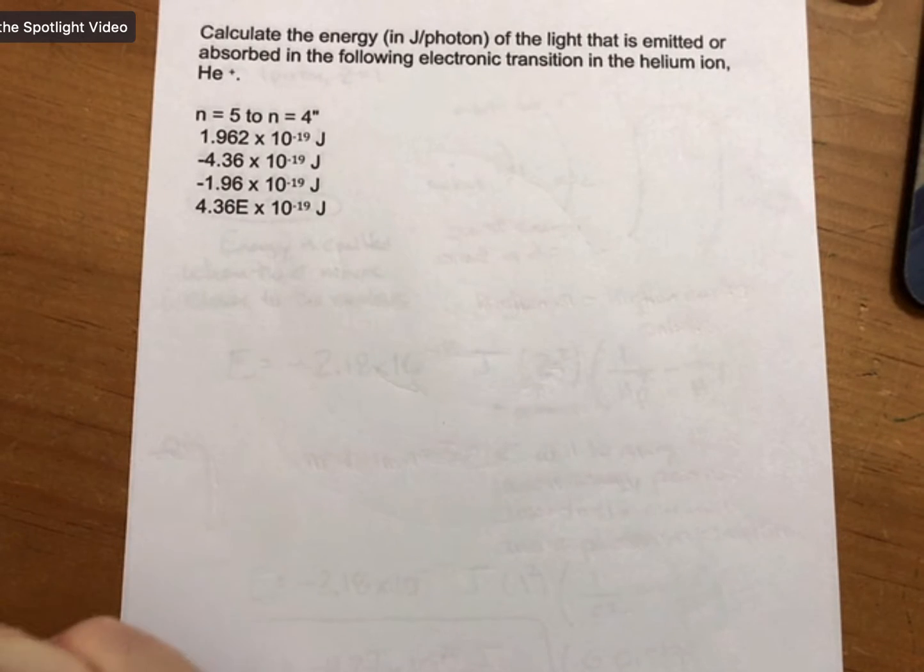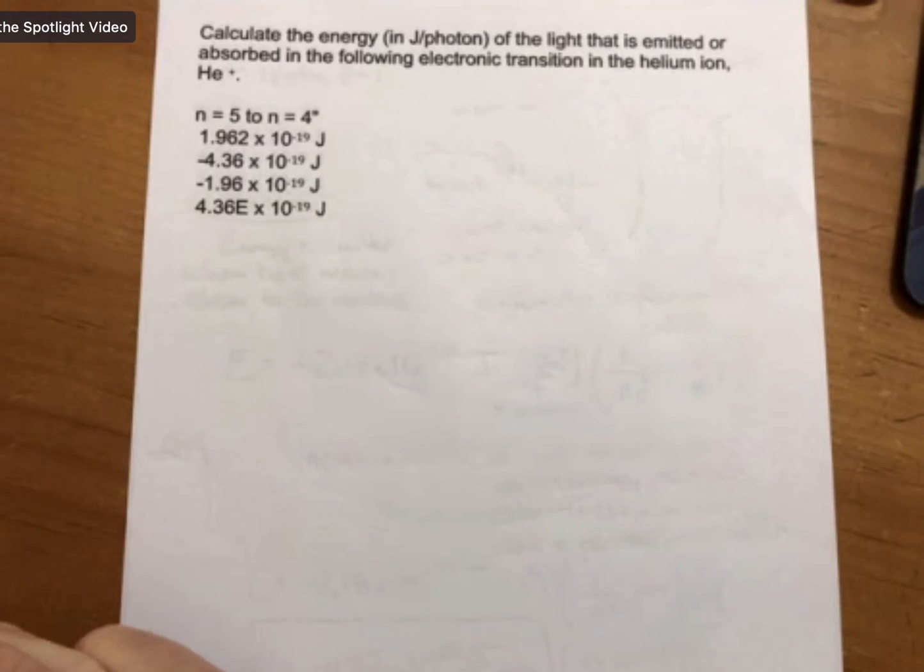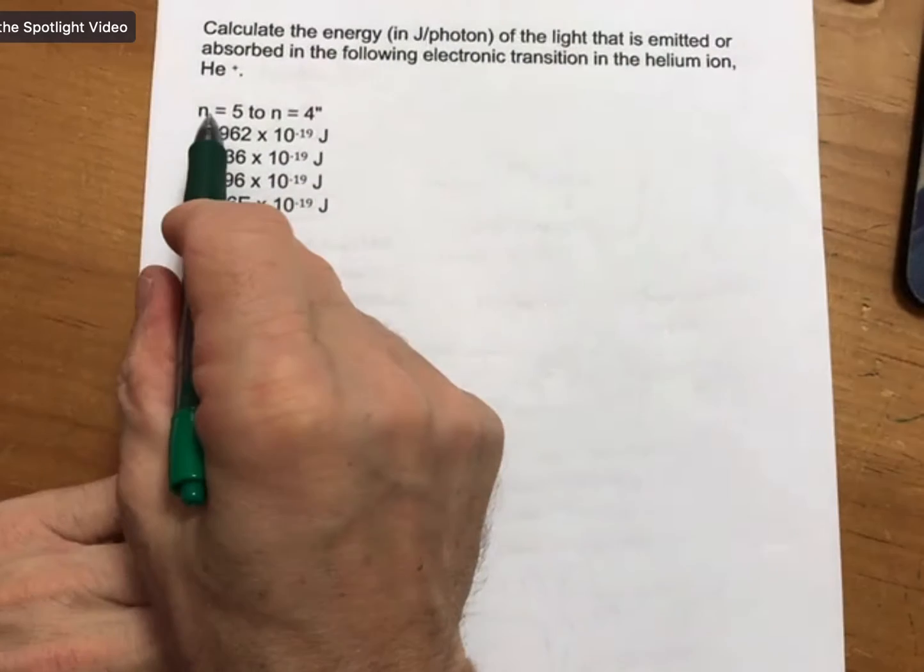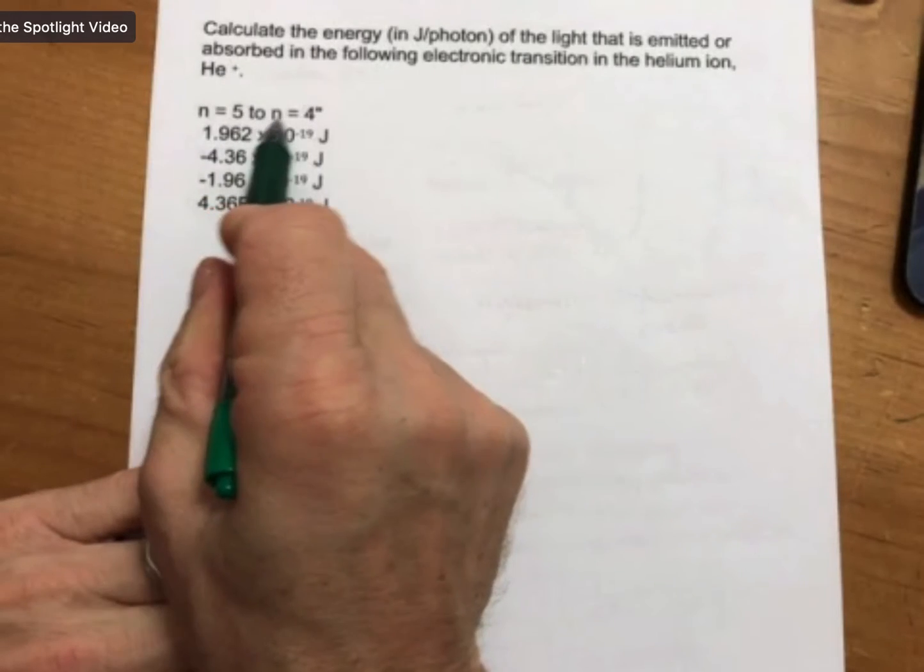This is number 13. It says calculate the energy in joules per photon of the light that is emitted or absorbed in the following electronic transition in the helium ion. And here we have helium plus, and now we're moving from n equals 5 to n equals 4.